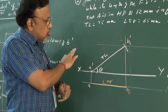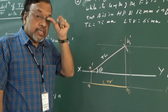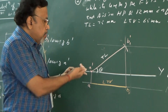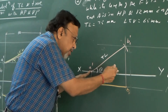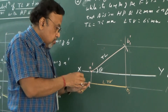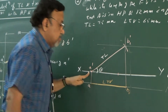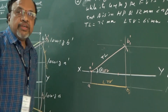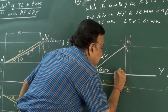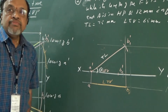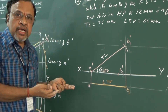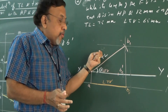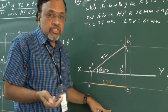Now, do the same procedure starting from the front view. It is given that the length of the front view is 50 mm. We already know where A dash is. So on XY itself, I will mark 50 mm. Let us say we get a point somewhere here — this is LFV, and this is A dash. Let me call this point B2 dash.